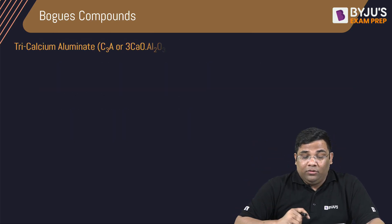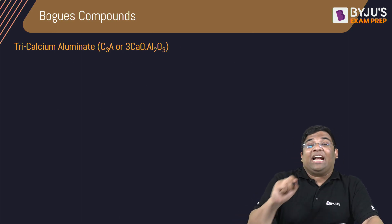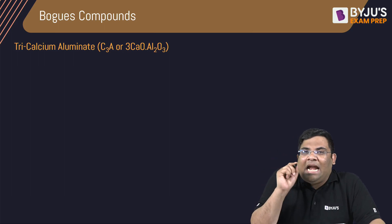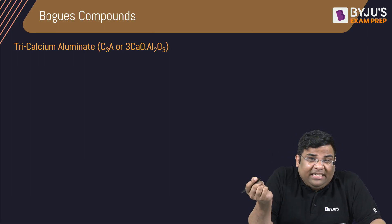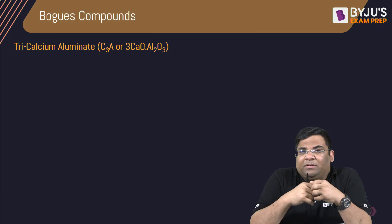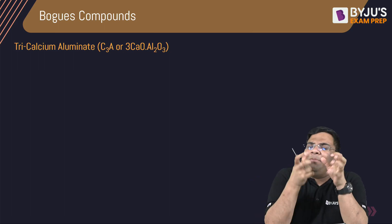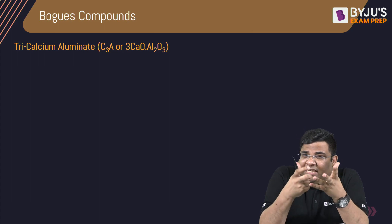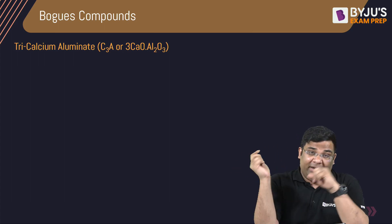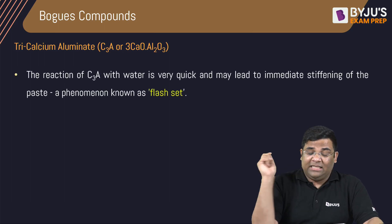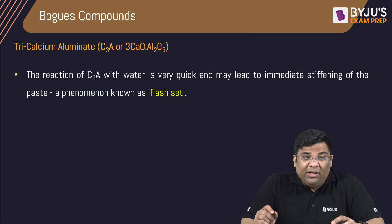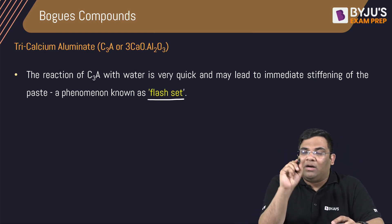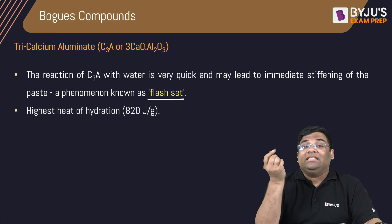Now coming to C3A — it is very reactive and reacts with water very fast. It is responsible for the flash set, which is the initial fast setting of cement. When you add water to cement, the early stiffening you observe is due to the reaction of C3A with water. C3A is also responsible for flash set and has the highest heat of hydration — 820 joules per gram.